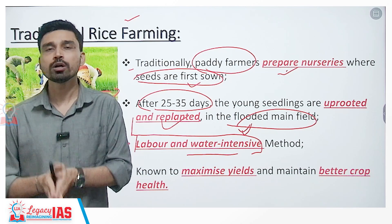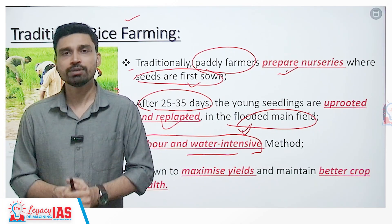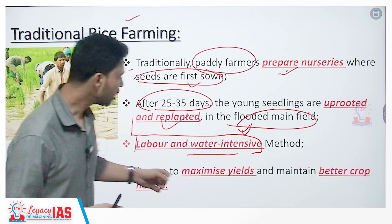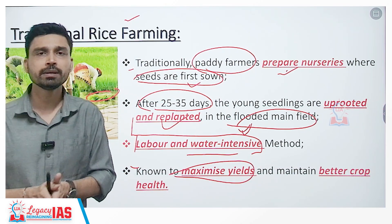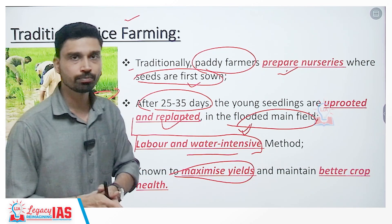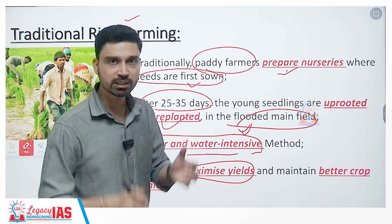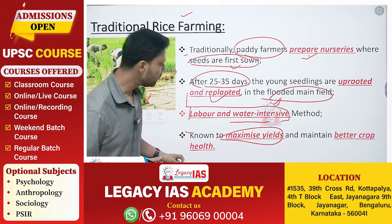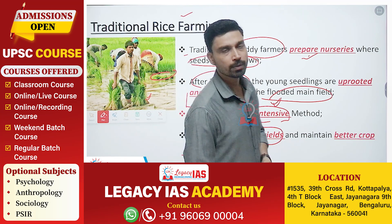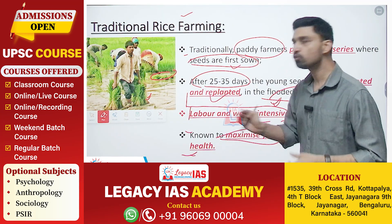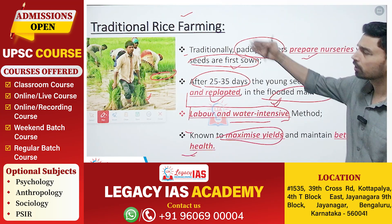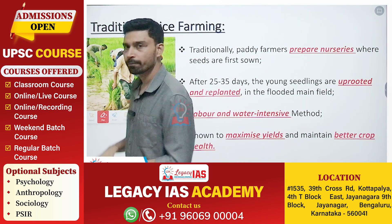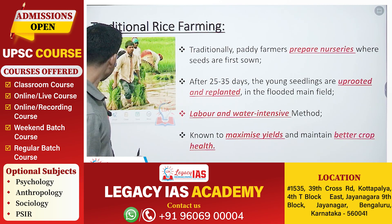Talking about the advantages of the traditional method, the yield is maximum — the highest amount of yield can be expected from this method. It also helps in maintaining better health of the rice crop. Because of these two benefits — maximum yield and better crop health — farmers are still preferring traditional rice farming.